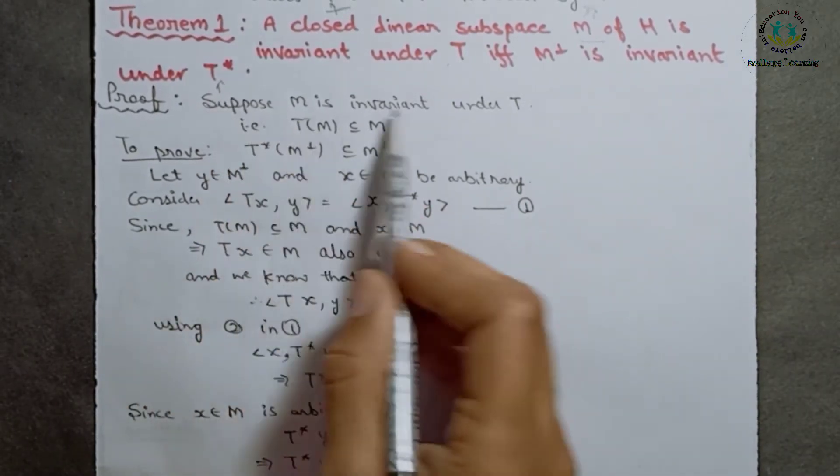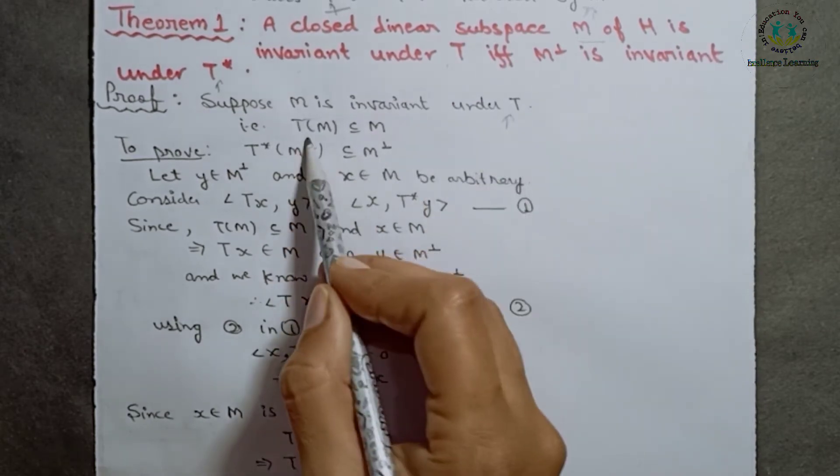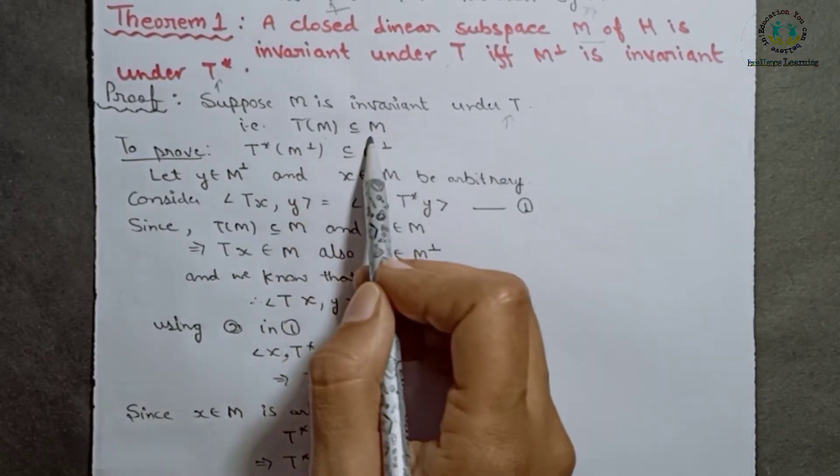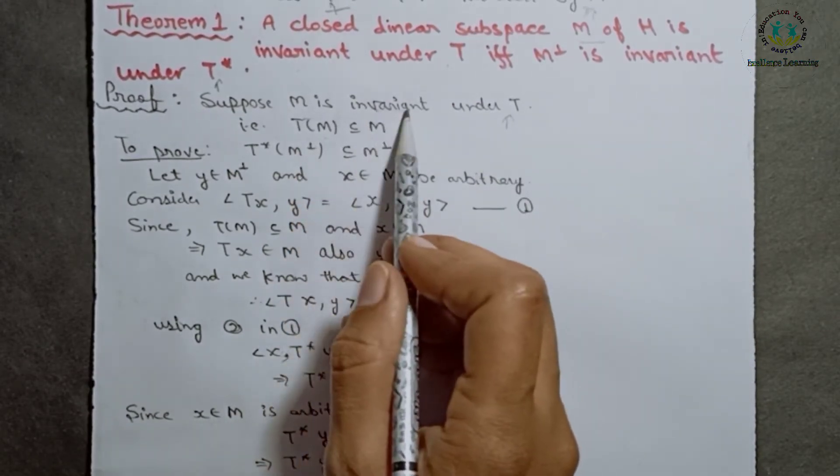Proof: Suppose M is invariant under T. Then T(M) will be a subset of M by definition of invariance of a set.